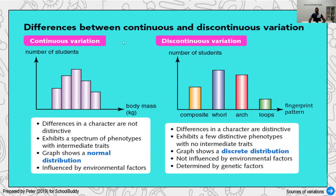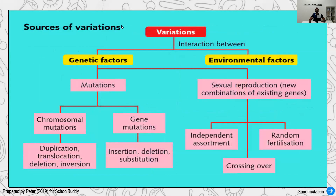Next, we're going to see the sources of variation — why some people are different in different situations. Variation is caused either by genetic changes or environmental factors. Genetic causes involve mutation — changes at the chromosome or gene level. Environmental causes include sexual reproduction: the combination of genes during fertilization, random fertilization, the assortment of genetic factors, and crossing over that happens during meiosis.